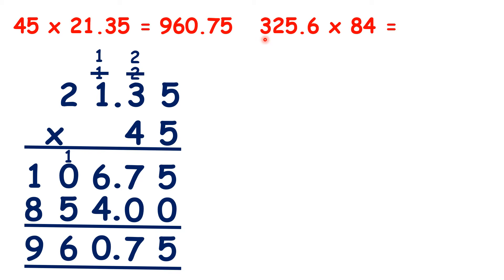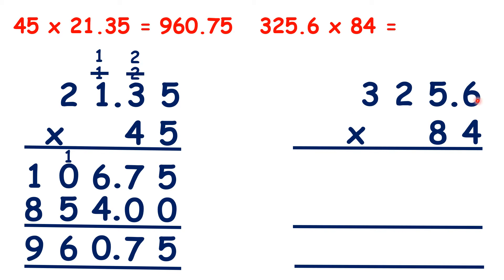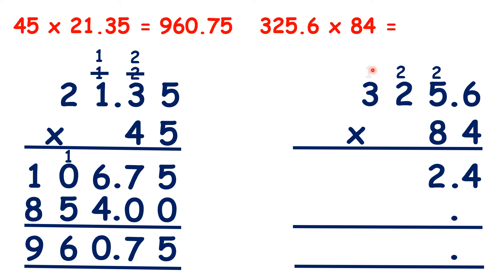So now pause the video and see if you can work out 325.6 times 84. So we can set out our multiplication like this, putting the number with the most digits at the top. Because we have one decimal place in our question, there will be one decimal place in the answer. So we can write a decimal point before the final digit of each of our answer lines. Now we can just multiply as we normally would if we were doing 3256 times 84. 6 times 4 is 24. 5 times 4 is 20 plus 2 is 22. 2 times 4 is 8 plus 2 is 10. And 3 times 4 is 12 plus 1 is 13.